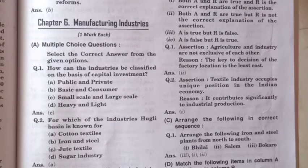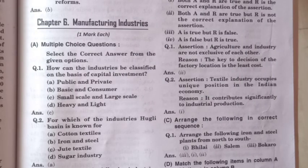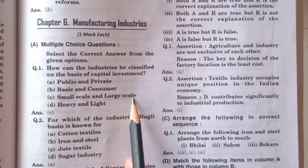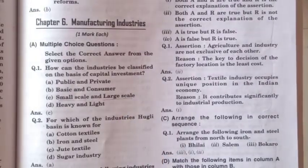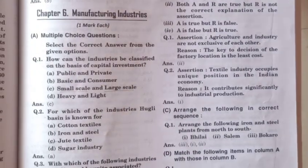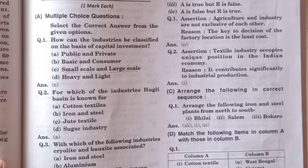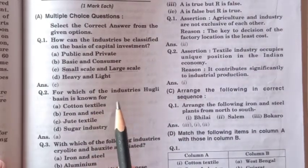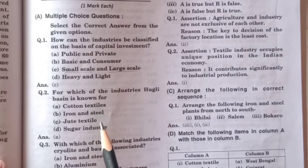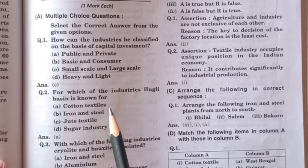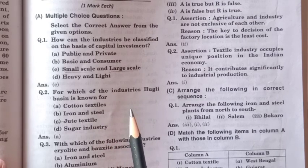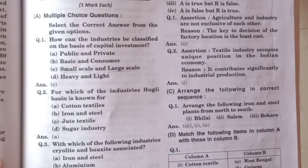Industries set up with less than 5 crore rupees are known as small scale, and more than 5 crore rupees is large scale industry. Next question: for which industry is the Hooghly basin known? The Hooghly basin is known for the jute textile industry, not cotton textile, because the Hooghly basin is associated with West Bengal and Kolkata, which is the home of jute.